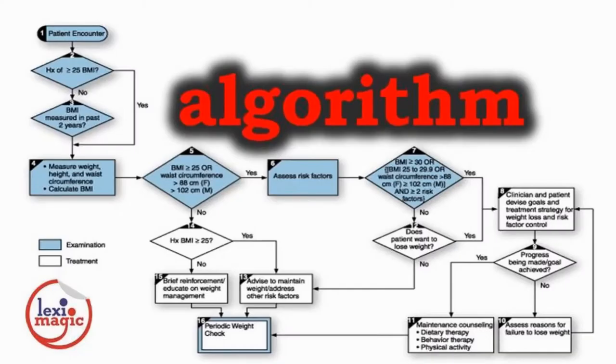Algorithm is a step-by-step procedure to solve a mathematical problem. Its origin is from the name of the Arabic mathematician Al-Khwarizmi.